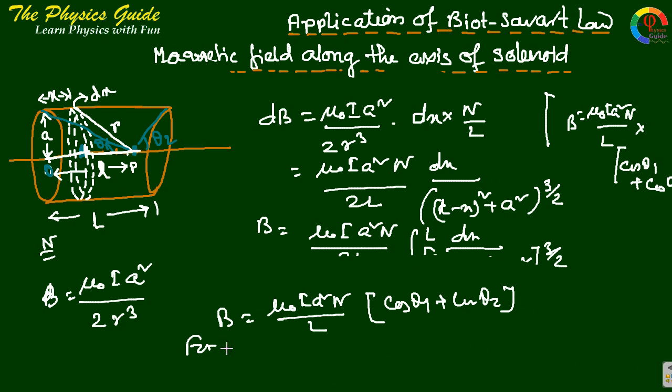For infinite, for an infinite cylinder, theta 1 equals theta 2 equals 0. So this implies B equals mu0 N I by L.